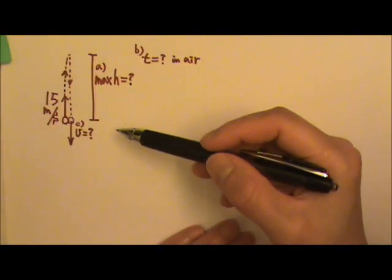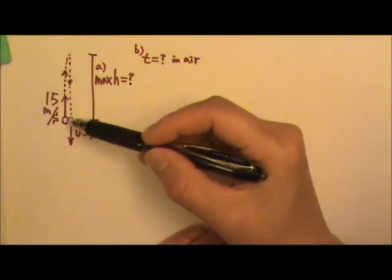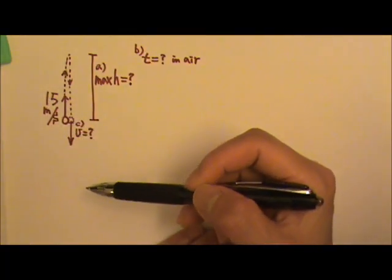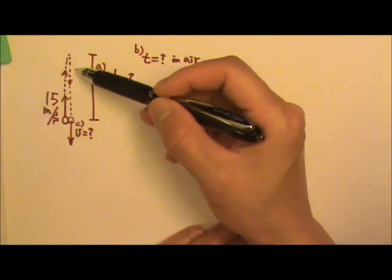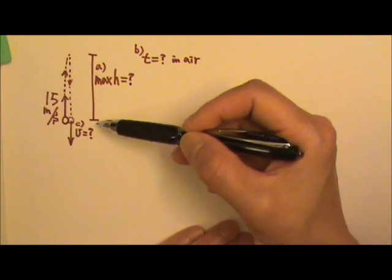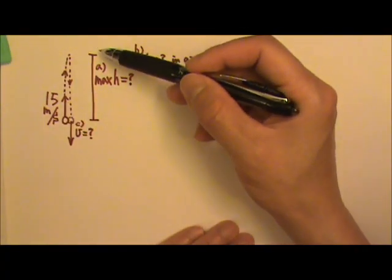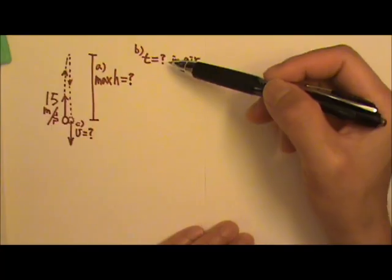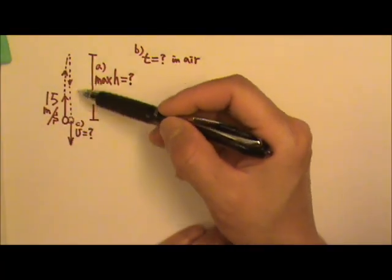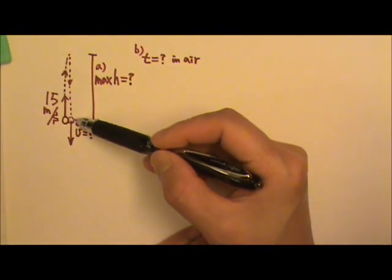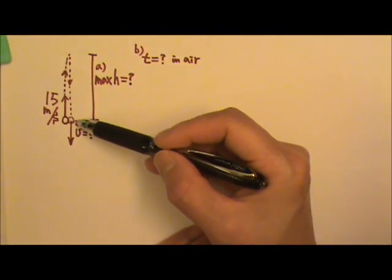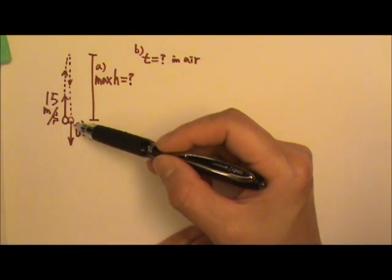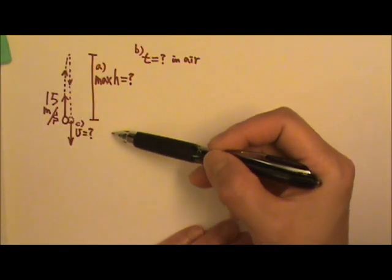Let's try a problem like this. A rock is thrown straight up at a speed of 15 meters per second. The rock goes up before coming back down. How high above its starting position can the rock go? How long does the rock stay in the air before it's caught at its initial position? And what is the rock's velocity just before it's caught?